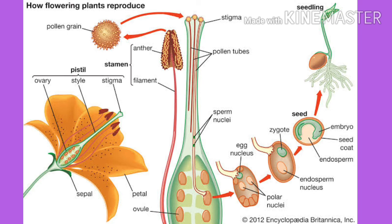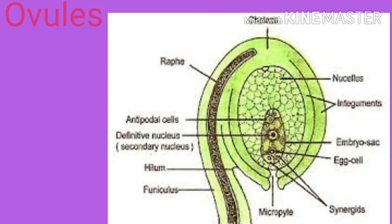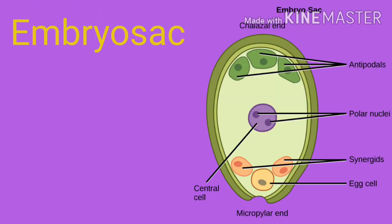The ovary contains cushion-like regions called placentas, which bear one or more ovules. An ovule is attached to its placenta by a stalk known as a funicle. The ovule is provided with two protective coverings known as integuments. Integuments leave a small opening called the micropyle at the tip of the ovule. The ovule contains an embryo sac located in the nucellus at the micropyle end.